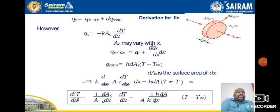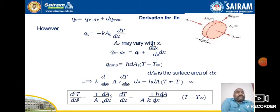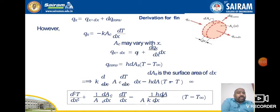We need to find QX+dX. For the elemental thickness dX, the rate of heat transfer is QX+dX = Q + (dQX/dX)·dX. The convection heat transfer is H·dAs·(T − T∞). Here the surface area considered is very small, dAs. H is constant over the surface while T and T∞ are variable. We can further write the equation as: d²T/dX² + (1/A)·(dAc/dX)·(−dT/dX) − (1/AK)·H·(dA/dX)·(T − T∞) = 0.